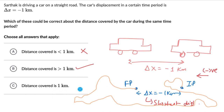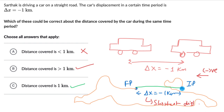Option C says distance covered is 1 kilometer. If the car started from the initial position and then just went straight to the final position, the magnitude of displacement is 1 and also the distance covered is 1 kilometer. So distance covered can be equal to the displacement magnitude. This is only true if the car traveled in a straight line between the initial and final position, without ever reversing or going far ahead — it started from the initial position and traveled straight to the final position. Only then can the distance equal the displacement magnitude.